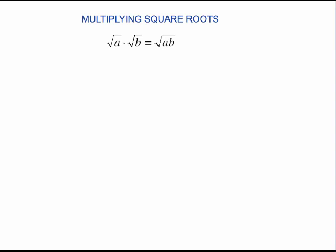This video will teach you how to multiply square roots. The primary property you're going to use is: the square root of a times the square root of b is simply the square root of a times b. Generally speaking, a radical times a radical equals another radical. Sometimes that radical could be simplified and sometimes not.